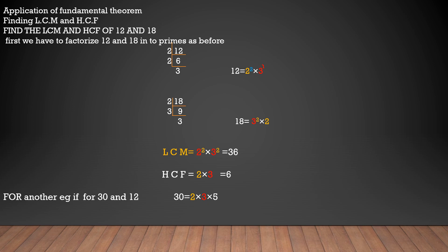Let us take another example: 30 and 12. So 30 = 2 × 3 × 5, and 12 = 2² × 3. For LCM, write all factors: 2, 3, 5 with the highest powers — highest power of 2 is 2, of 3 is 1, of 5 is 1. For HCF, take only the common factors 2 and 3 — 5 cannot be taken since it is not in 12. The least power of each is 1. So by using the Fundamental Theorem of Arithmetic, we can find LCM and HCF by taking all factors with highest powers for LCM, and only common factors with least powers for HCF.